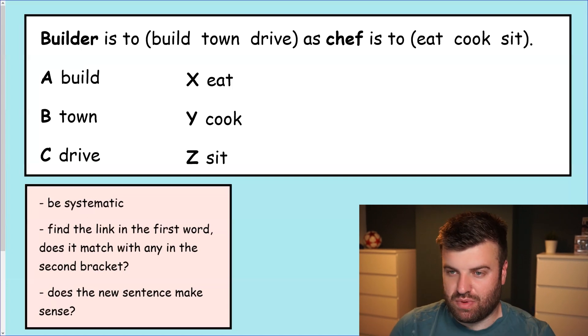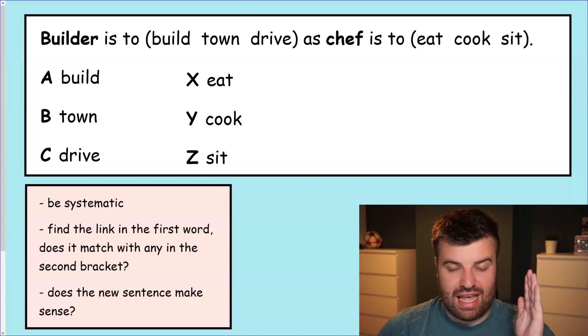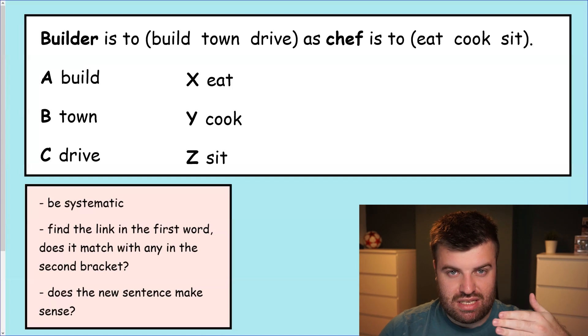Now let's take a look at this one. Builder is to something and it's going to be one of those three words in the first bracket, as chef is to something in the second bracket. Now we've got to pick the two best words to complete the sentence in the best way. How can we do that? Well as always we've got our top tips at the bottom in our pink box. First one, be systematic. It's a really helpful tip in almost everything that we do in this test. Being systematic means that we're more likely to get an answer, and that means working in an orderly fashion, not just looking at random answers to see if they work.